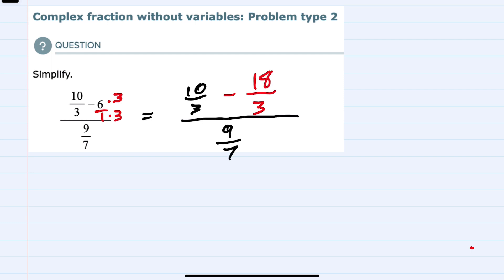And now that we have the common denominator, we can subtract. So in the top, we have a common denominator here of 3. We would keep that denominator, and then in the numerator, we have 10 minus 18, just going left to right, which gives us a minus 8,